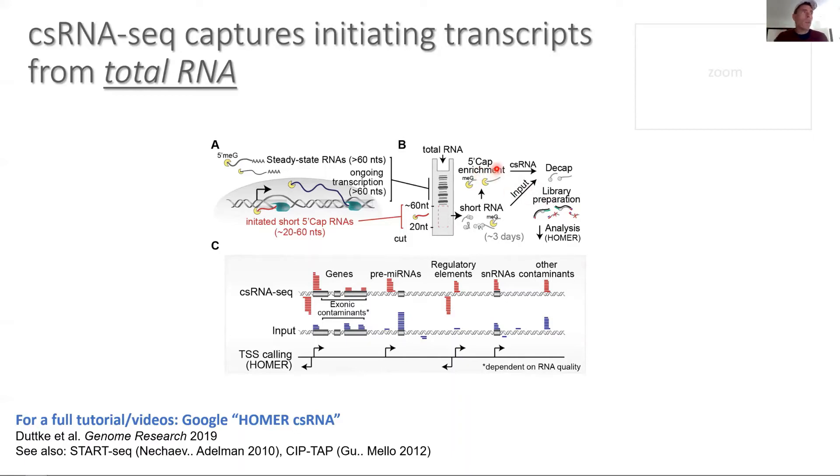The remainder—90%—we cap enrich. Anything that doesn't have a cap, we try to remove the phosphates so they're no longer subject to adapter ligation during library preparation. We do that using two different enzymes. One is the Terminator, which removes monophosphate but that is a 5-prime-dependent phosphate nuclease. It's not very efficient. MicroRNAs which have a 5-prime phosphate often have steric hindrance and are not as efficiently degraded by this enzyme.